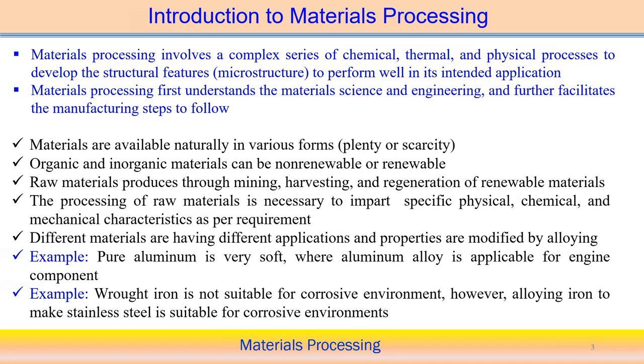Pure aluminum is very soft, but when aluminum is converted to an aluminum alloy there are different possibilities of different aluminum alloys. For example, an aluminum alloy can be applicable for engine components, whereas pure aluminum may not be required for that application — pure aluminum can be used somewhere else. Similarly, wrought iron is not suitable for corrosive environments because it can easily corrode. If you alloy wrought iron by mixing it with other elements and convert it to steel, steel has very high corrosion resistance and can work in corrosive environments.